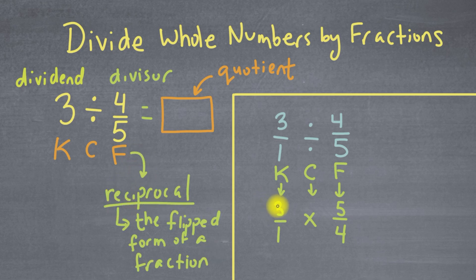So now that we've kept our dividend, we kept it as 3 over 1, we changed our division into multiplication, and we flipped or found the reciprocal of our divisor, 4 over 5 that flipped to become 5 over 4. Now we just have to solve this. And it's not too bad because all we have to do is take the numerators and multiply them, and then take the denominators and multiply them.